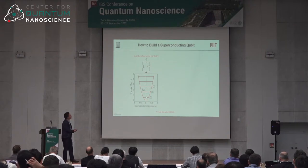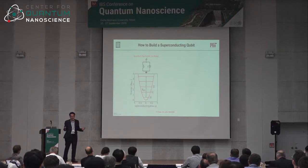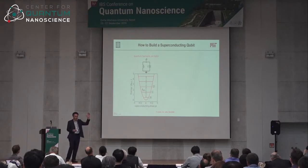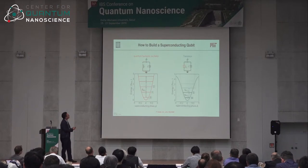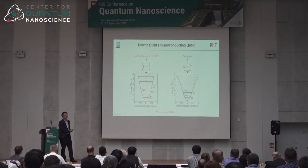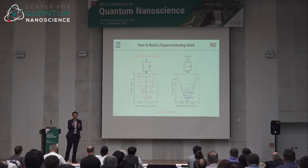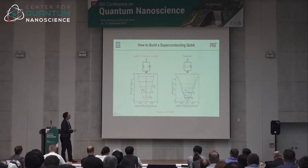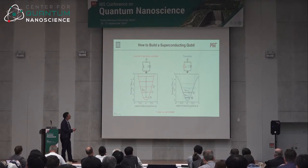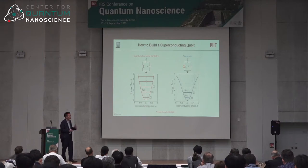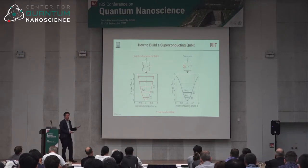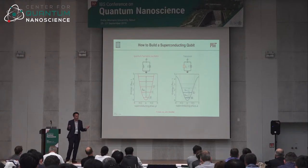A simple harmonic oscillator isn't useful for computing because the frequency separations between levels 0–1, 1–2, etc. are all the same — you can't isolate the zero-one transition. So we replace the inductor with a nonlinear inductor called a Josephson junction: two superconducting leads separated by a nanometer-scale oxide barrier. This makes the oscillator anharmonic, so the energy levels are no longer equally spaced, and we can uniquely drive the zero-one transition. More anharmonicity is better.